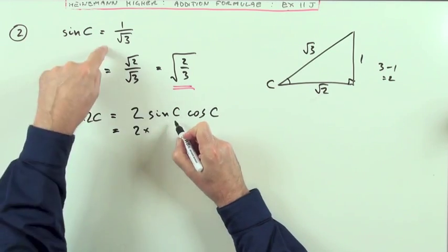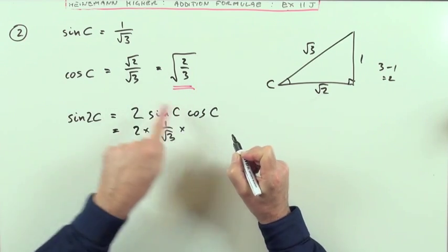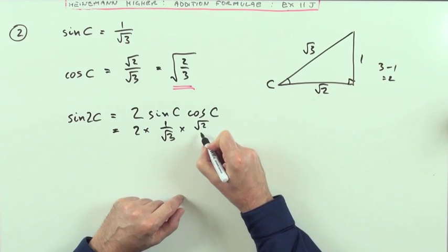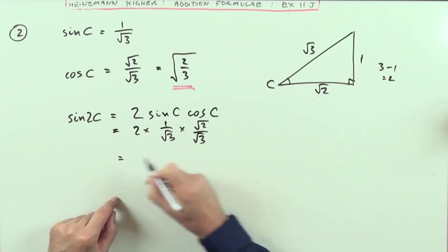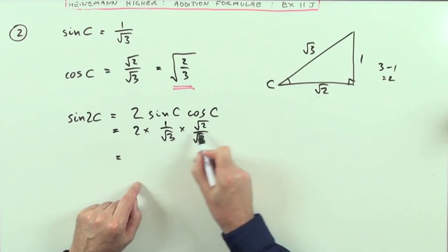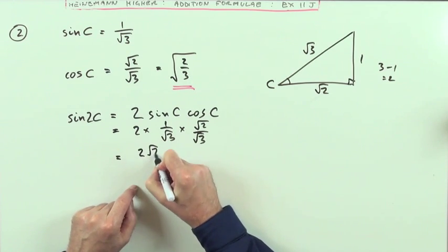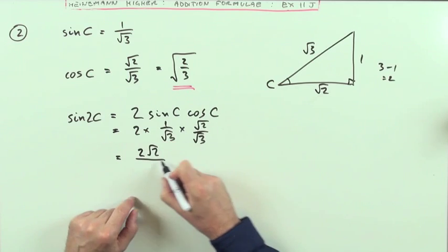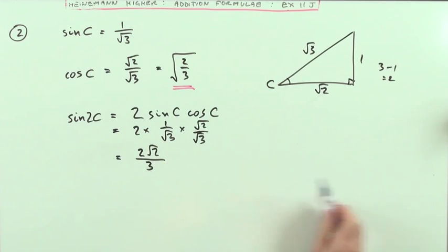I've got 2 times the sine of C was 1 upon root 3. The cosine of C, I think I'll use this form here, is root 2 upon root 3, because it's got the numerator and denominator separated. Then, for the numerator, it's going to be 2 times root 2. And for the denominator, it'll just be root 3 times root 3, which just puts you back to 3 again.